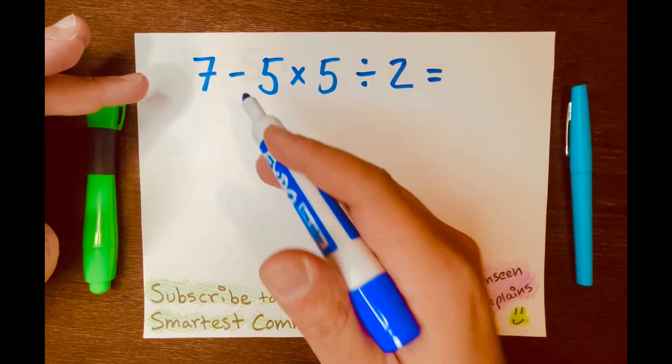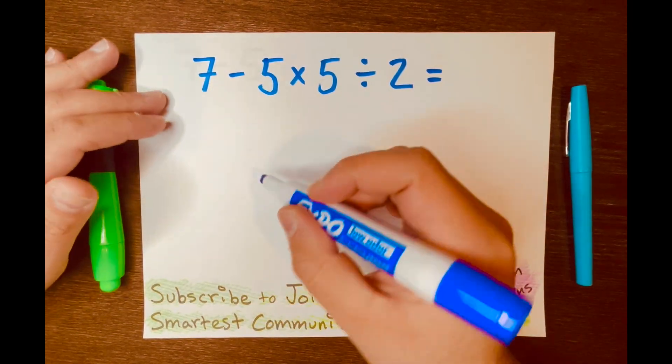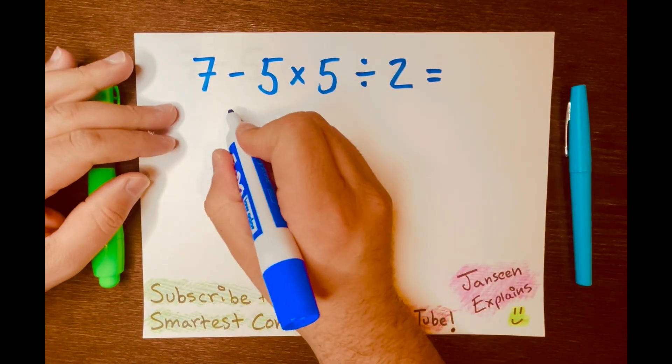Hi everyone, some people will subtract 7 minus 5 and they'll write 2, because 7 take away 5 equals 2.